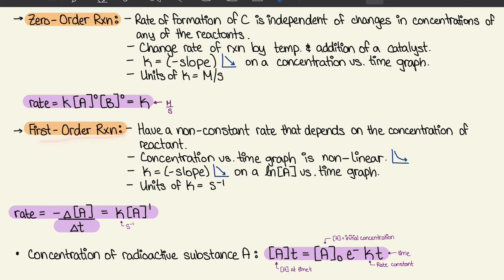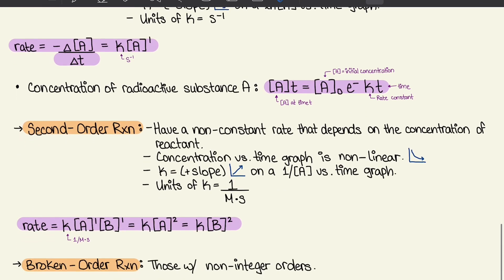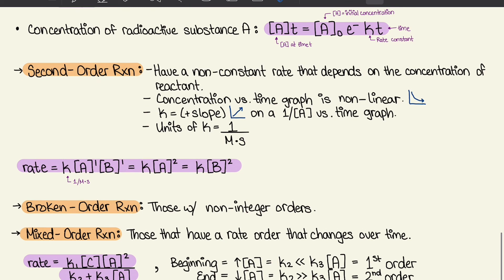For a first order reaction, they have a non-constant rate that depends on the concentration of the reactants. The concentration versus time graph is non-linear, and K has a negative slope on a ln[A] versus time graph. The units for K in a first order reaction are s⁻¹. The equation is: rate equals negative delta[A] over delta T, equals K times [A]¹. The concentration at time T is: [A](T) equals [A]₀ times e to the power of negative KT, where [A]₀ is the initial concentration, K is the rate constant, and T is the time.